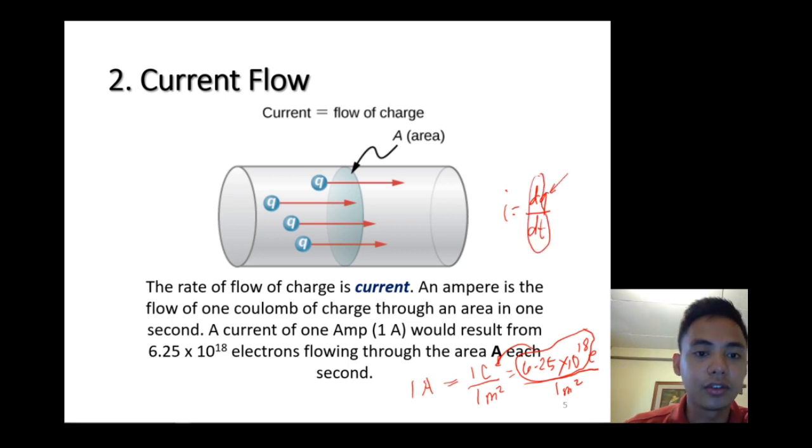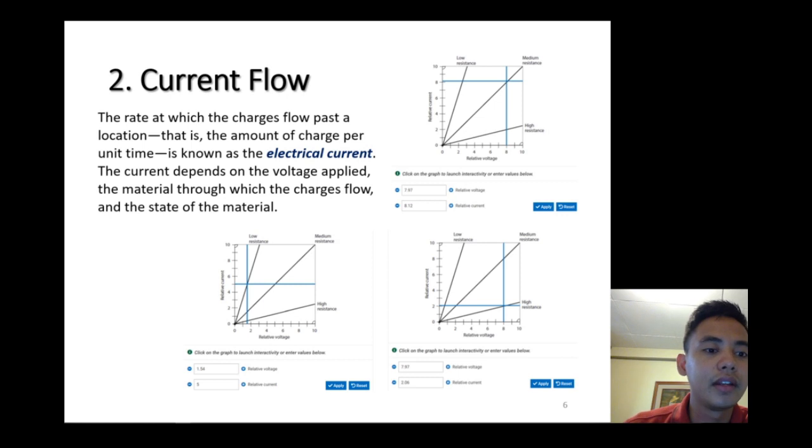Electrical current: the rate at which the charge flows past a location, that is, the amount of charge per unit time, is known as the electrical current. You might think current is also water current, so electrical current. Don't be confused. The current depends on the voltage applied, the material through which the charges flow, and the state of the material.